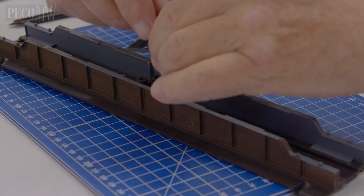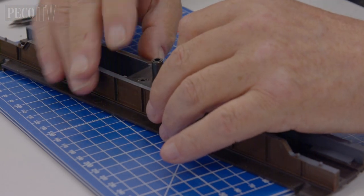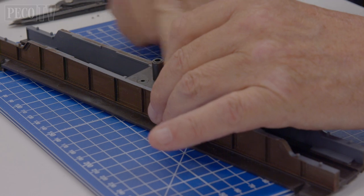Then cement the bearing block into position ensuring it is pushed fully home on the plunger housing and into the location on the bridge sides.